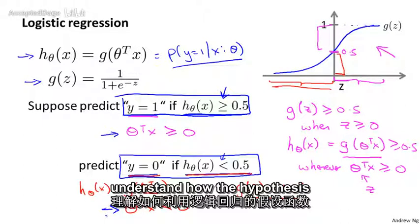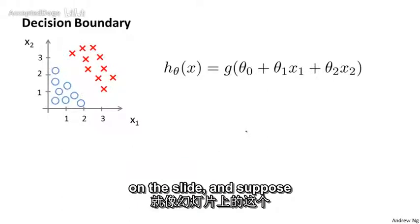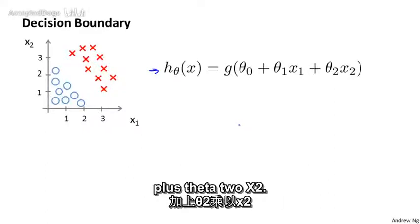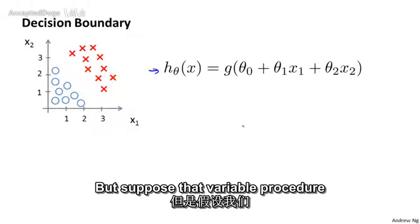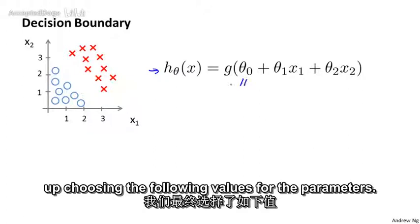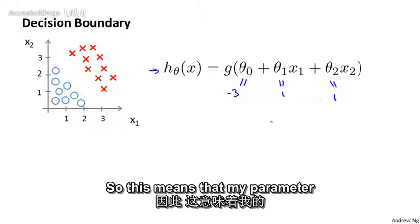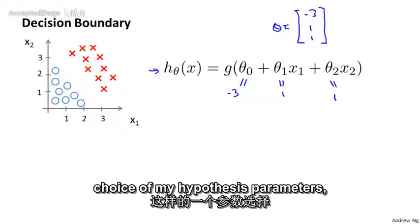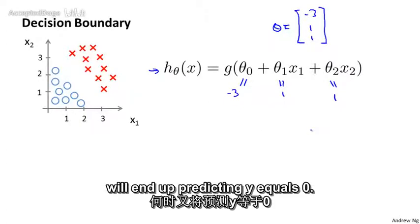Let's use this to better understand how the hypothesis of logistic regression makes predictions. Suppose we have a training set like the one shown, and our hypothesis is h of x equals g of theta 0 plus theta 1 x1 plus theta 2 x2. We haven't talked yet about how to fit the parameters of this model — we'll talk about that in the next video. But suppose that via a procedure to be specified, we end up choosing theta 0 equals minus 3, theta 1 equals 1, theta 2 equals 1, so our parameter vector theta is minus 3, 1, 1. Let's try to figure out where our hypothesis will predict y equals 1 and where it will predict y equals 0.